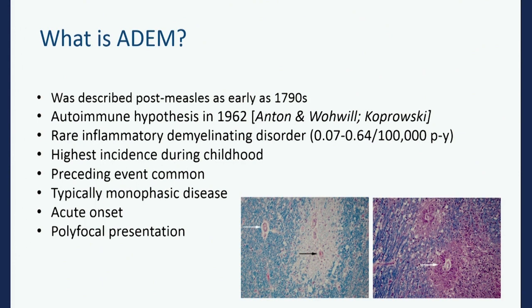All the criteria have only been proposed for children, so we don't have criteria for adults. We understand the highest incidence to be during childhood, but we see that with a grain of salt. We know that a preceding event is common — an infection. Vaccination gets a bad rap; it's not very common after all. ADEM is typically monophasic — when you have it, that's presumably the only time you'll ever have it in your life.